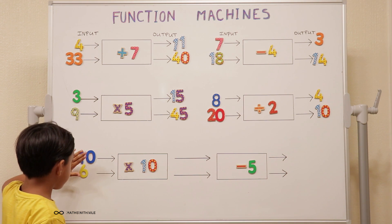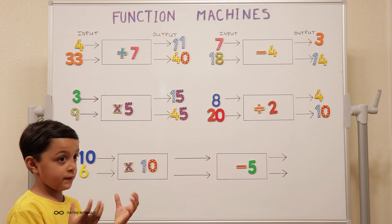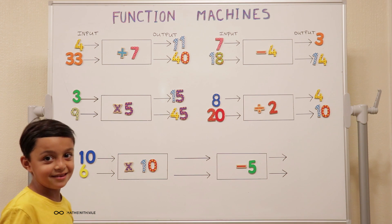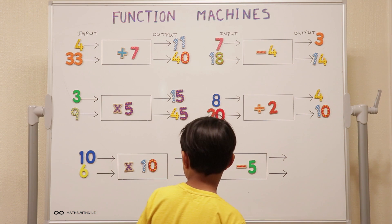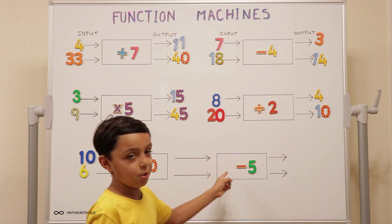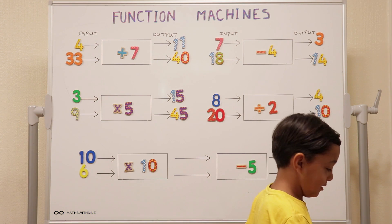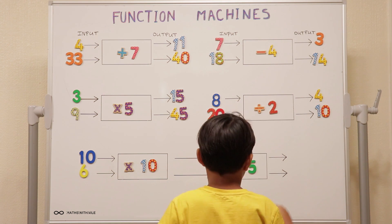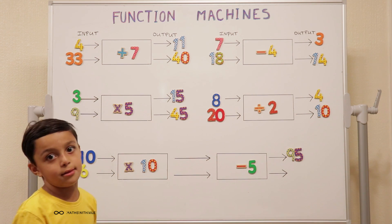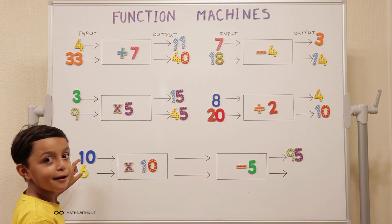First, we have to do ten times ten equals ten, twenty, thirty, forty, fifty, sixty, seventy, eighty, ninety, a hundred. So ten times ten is a hundred and then what? A hundred and then take away five equals ninety-five. Let's put the ninety-five up on the board. So the ten goes in. The first rule is to times by ten and get a hundred. It comes out and it goes into another box where the rule is minus five. So we have to take away five from a hundred to get ninety-five. Good job.